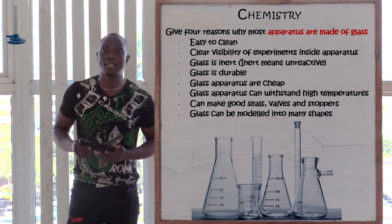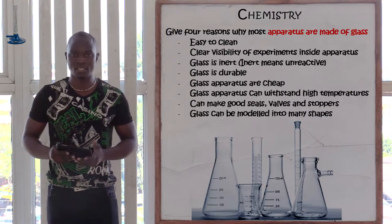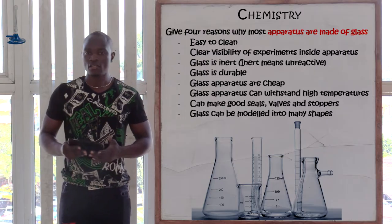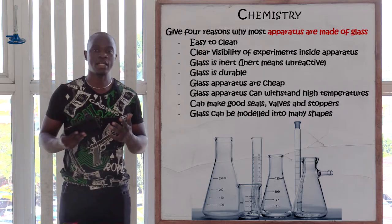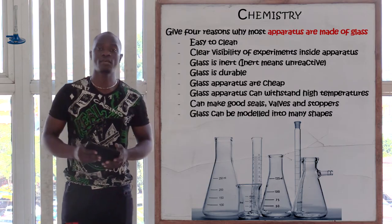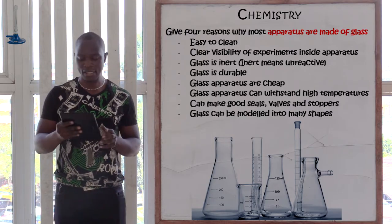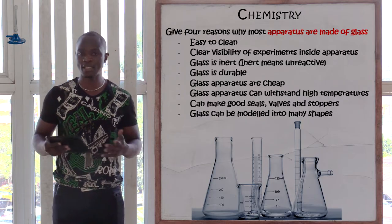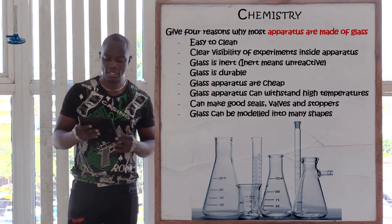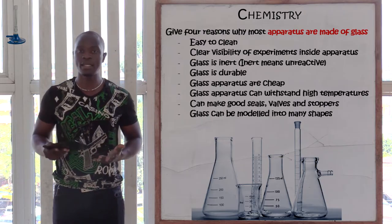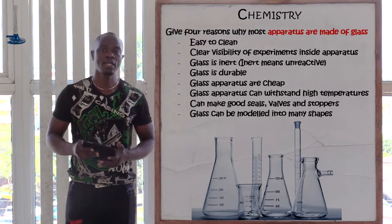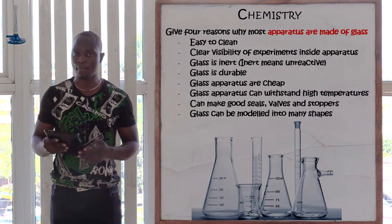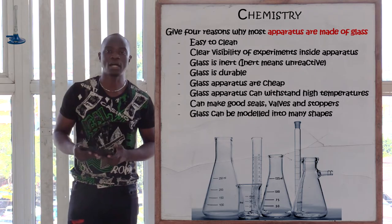The next reason is that glass is chemically inert, meaning that glass is unreactive. You can also frame your answer by saying that glass is basically unreactive. Also, glass is easily recyclable — it is easy to recycle glass apparatus compared to plastic apparatus.